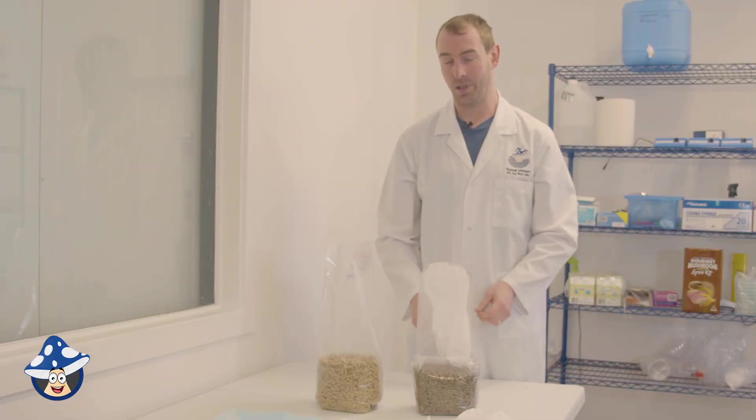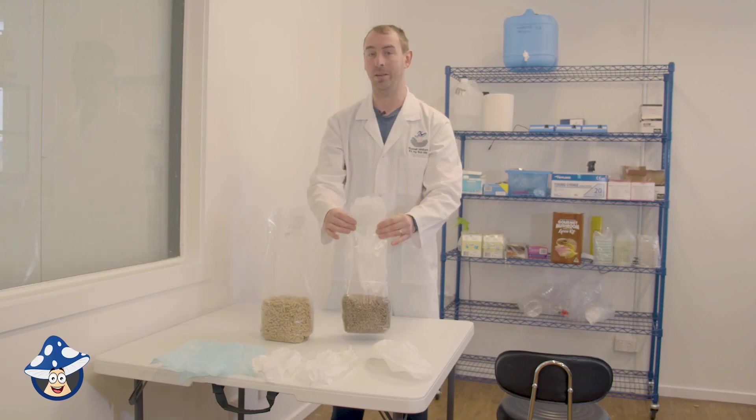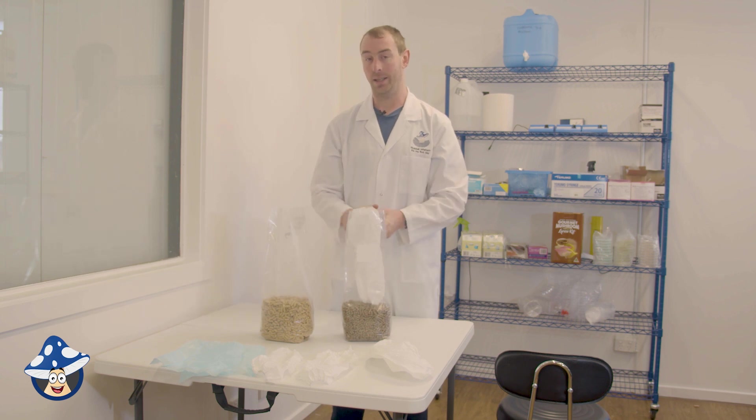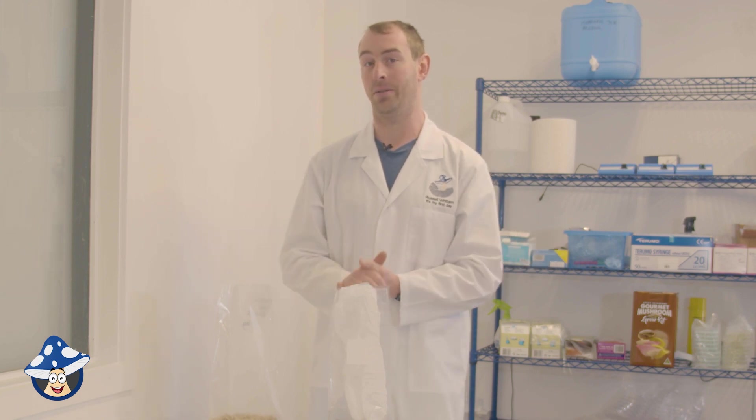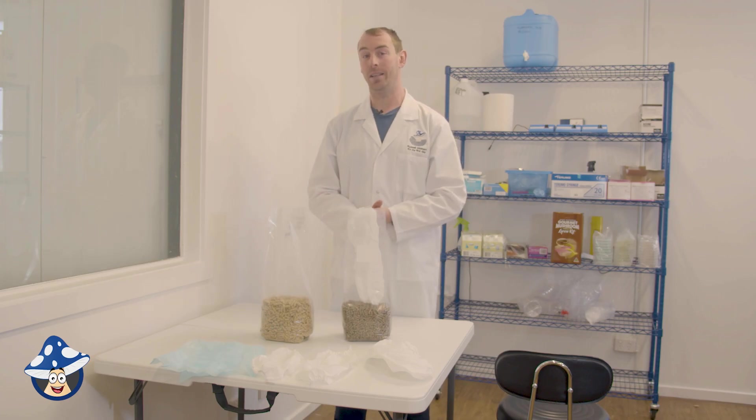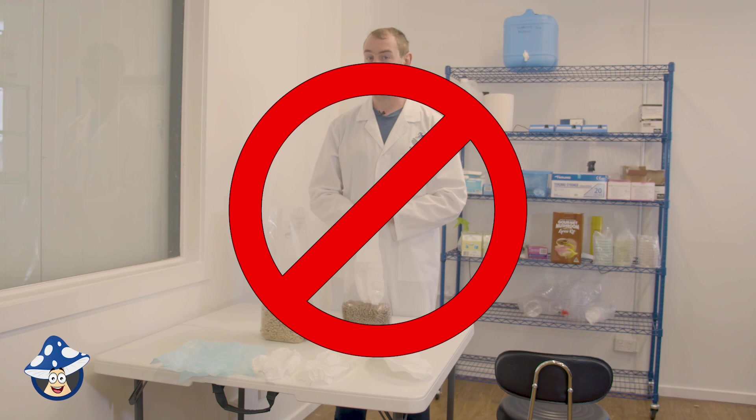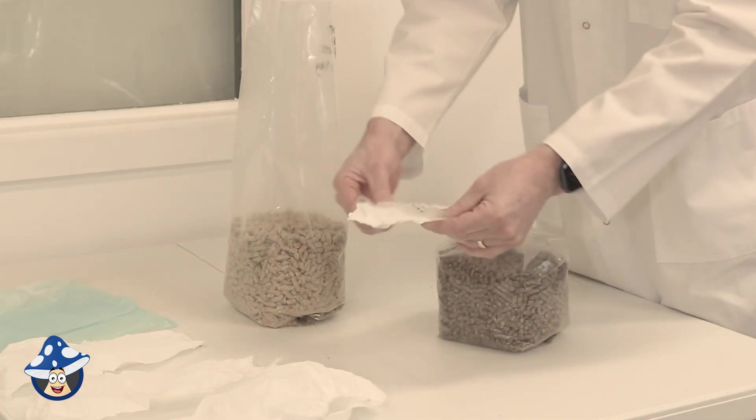One thing to never do is dry load your sawdust pellets and other pellets, because while they're soaking up the water, they expand. So if they're not fully hydrated before they're in your canner, they're going to keep expanding, and if your bag's fully folded down, it's going to blow your bag out as well. So one thing you never do is put your unhydrated material into your canner. So how this works...